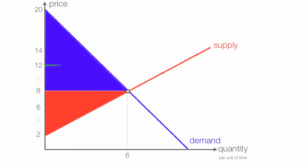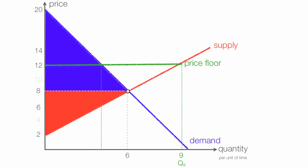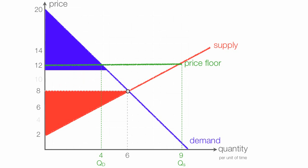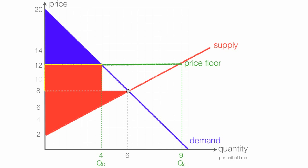When I impose a price floor — let's say a price floor of $12 — quantity supplied is 9 and quantity demanded is 4. What begins to happen is consumer surplus shrinks up to the level of the price floor. Some of that area transfers to the producer, which is the yellow rectangle — that transfers to the producer, so I'll make that red. Producer surplus becomes the area outlined by the yellow lines — I guess that's a trapezoid.